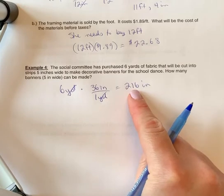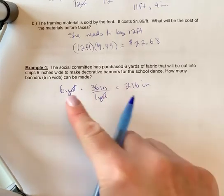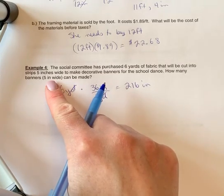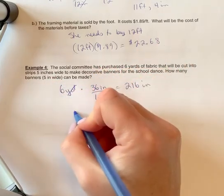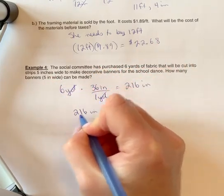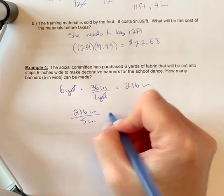So if I have 216 inches of fabric, I need to cut the strips of five inches. So I want to know how many times does five go into 216. So we take 216 inches divided by five inches.